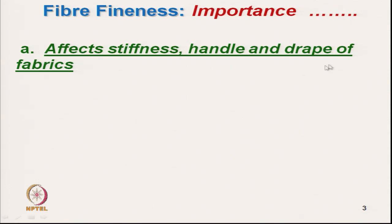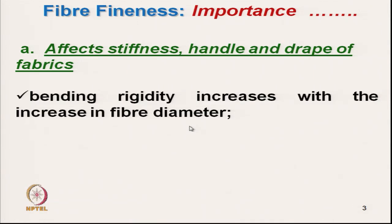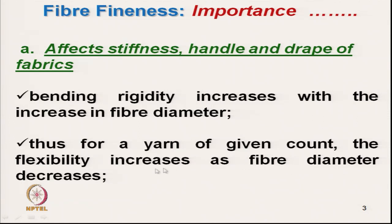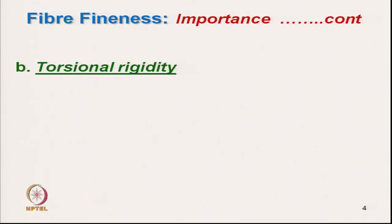Fineness affects various characteristics. First, it affects stiffness, handle, and drape of fabric. The bending rigidity of fibre increases with diameter. As fibre diameter increases, the bending rigidity and stiffness of the fabric will also increase, affecting drape. To achieve a very soft, highly drapeable fabric, we must use finer fibre. For a yarn of given count, flexibility increases as fibre diameter decreases.